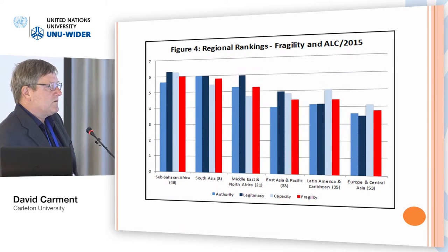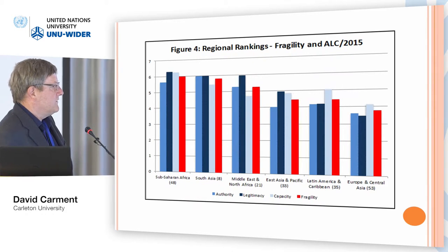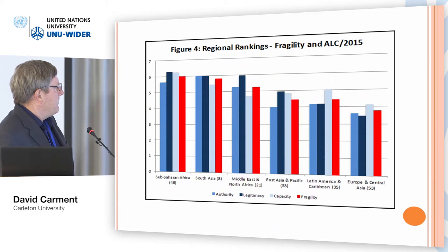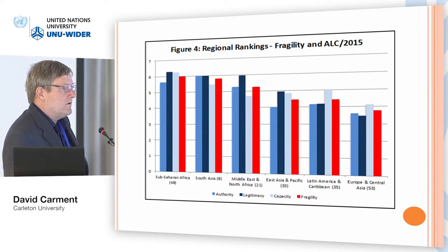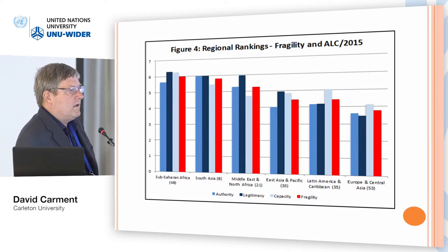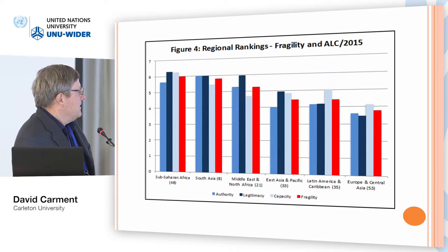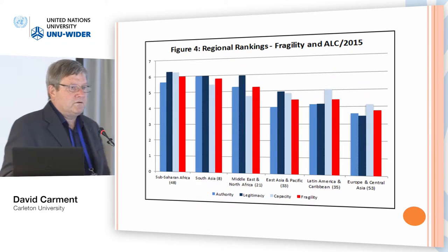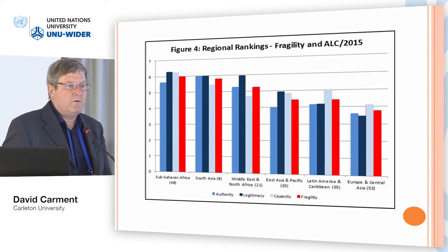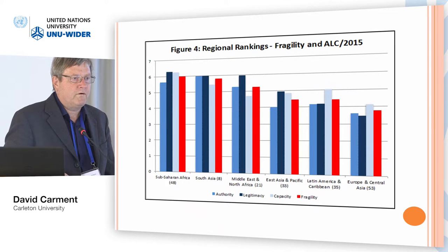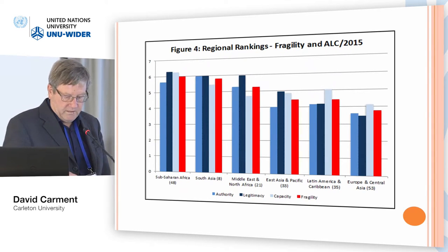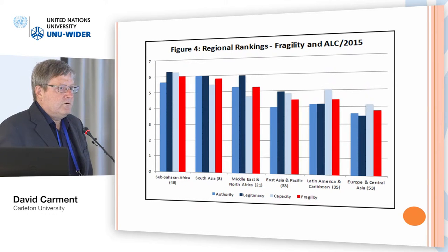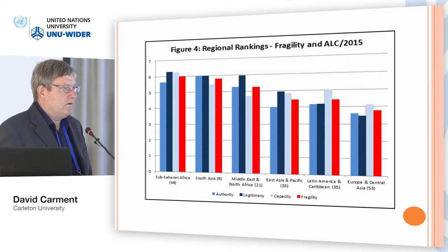Breaking down the ALC scores by region, sub-Saharan Africa is by far the most challenged overall, but South Asia is not far behind in authority and capacity. Notably, the Middle East and North Africa's legitimacy scores outrank performance in the other three dimensions. Our research has found that legitimacy was a key driver of the Arab Spring — it wasn't so much lack of economic development or poor governance but rather illegitimate governance driving the uprisings, with gender equality being a primary example, along with limited access to entitlements and influence in government.